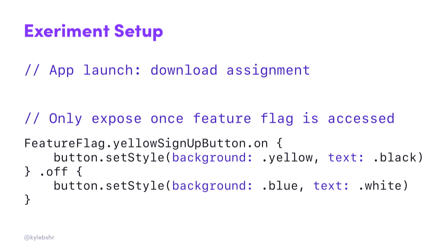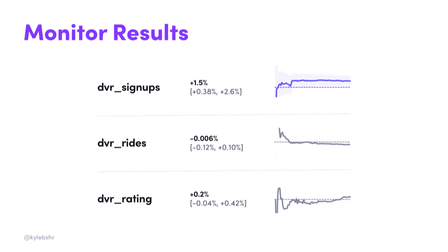So now that we've created our variation, we're going to ship it out into the wild with an App Store release. And after enough time, we'll get enough results to have some statistically significant metrics. Thanks to an incredible experimentation team here at Lyft, we have a dashboard that looks something like this for every experiment. It has all the statistics you're measuring, how much they've moved for your experiment, and a nice little graph to show their movement over time. And who knew you could increase sign-ups by 1.5% just by changing the background color?